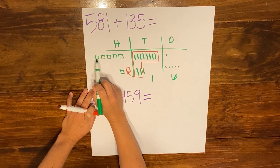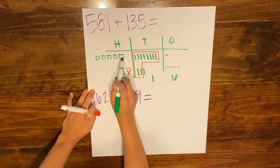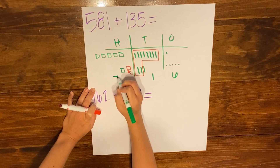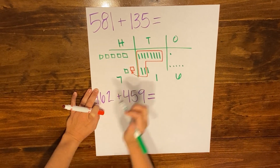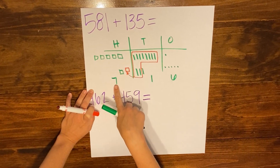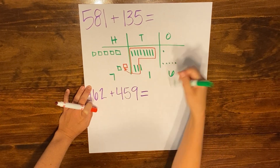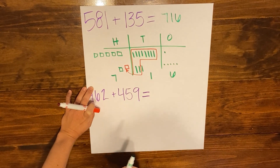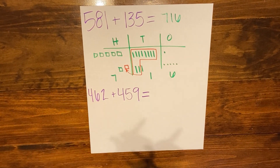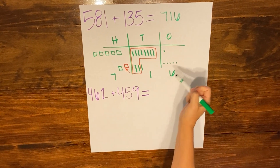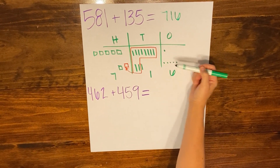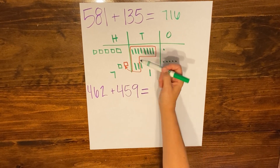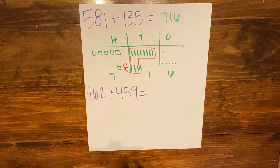I can move into my hundreds and count: 1, 2, 3, 4, 5, 6, 7 hundreds in the hundreds column. So the sum is 716. In this problem, we didn't need to regroup in the ones, but we did have to regroup 10 tens into one hundred.